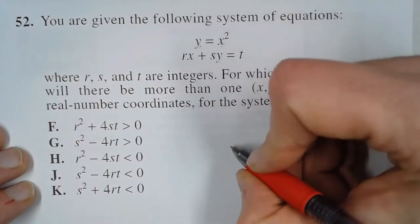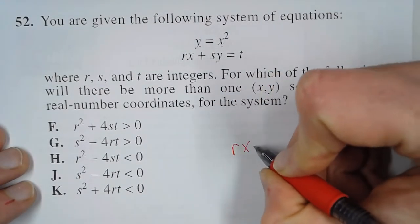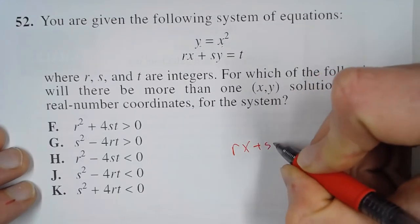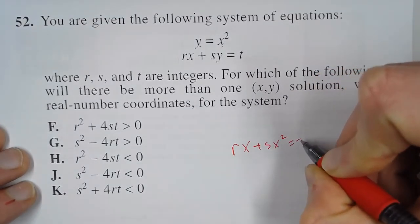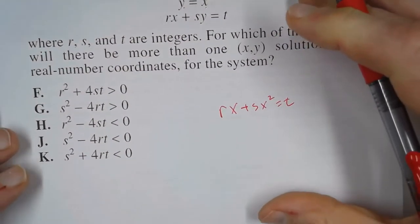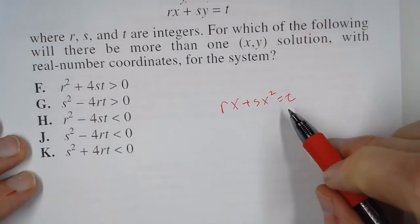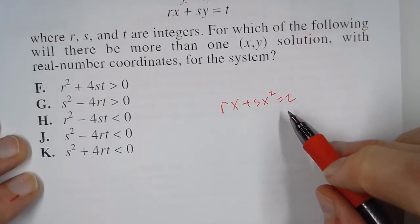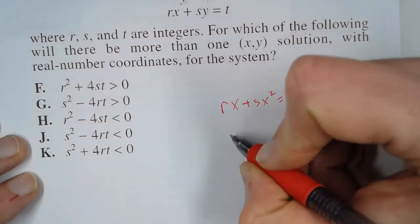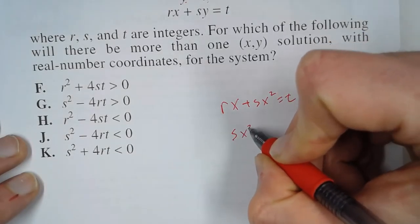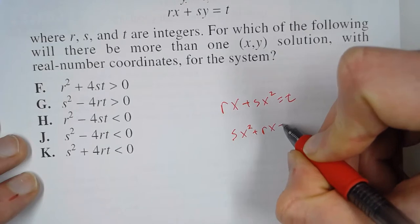So I'm going to do that for this bottom line. This bottom equation is going to be rx plus s times x squared equals t. So what we end up with is a quadratic. So to solve a quadratic, first thing we're going to do is rearrange these. So s times x squared plus rx equals t.